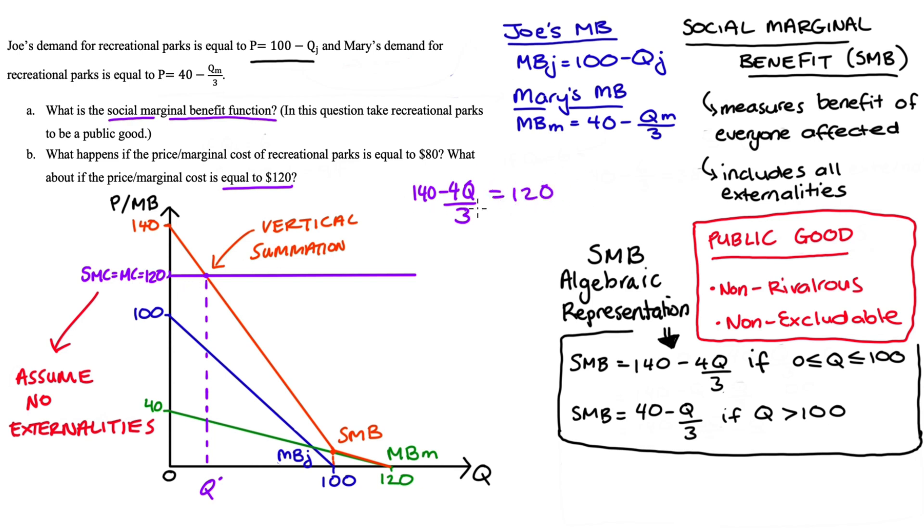Taking 140 away from either side we get -4q/3 is equal to -20. Multiply both sides by -3 and we get 4q is equal to 60. Divide both sides by 4 and we see that the optimal quantity is 15 that's the efficient amount and that's on our diagram there.